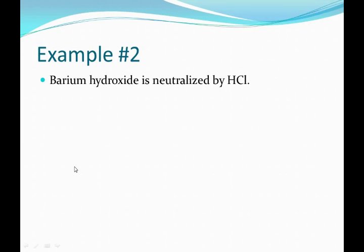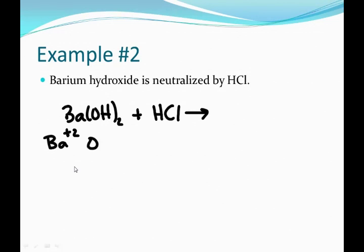Let's check another example. In this case, I have barium hydroxide reacting with or is neutralized by hydrochloric acid, which is HCl. And again, just checking to see what I'm working with. I've got barium, which is a plus two, hydroxide, which is a negative one, hydrogen, which is a plus one, and chlorine, which is a negative one.